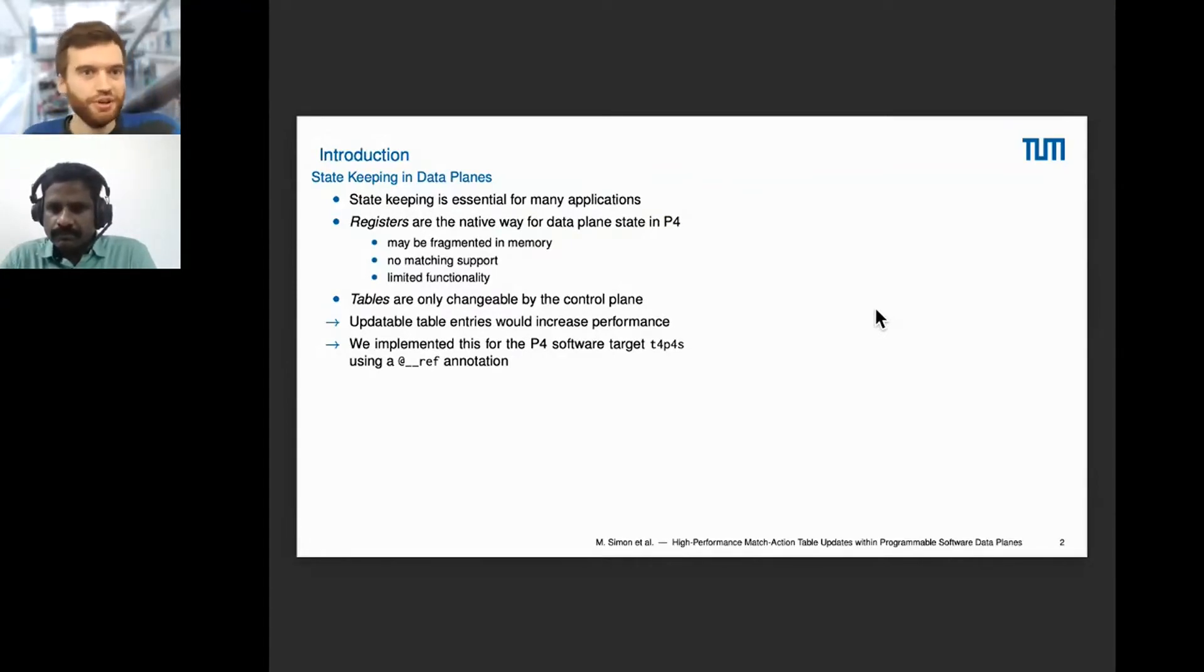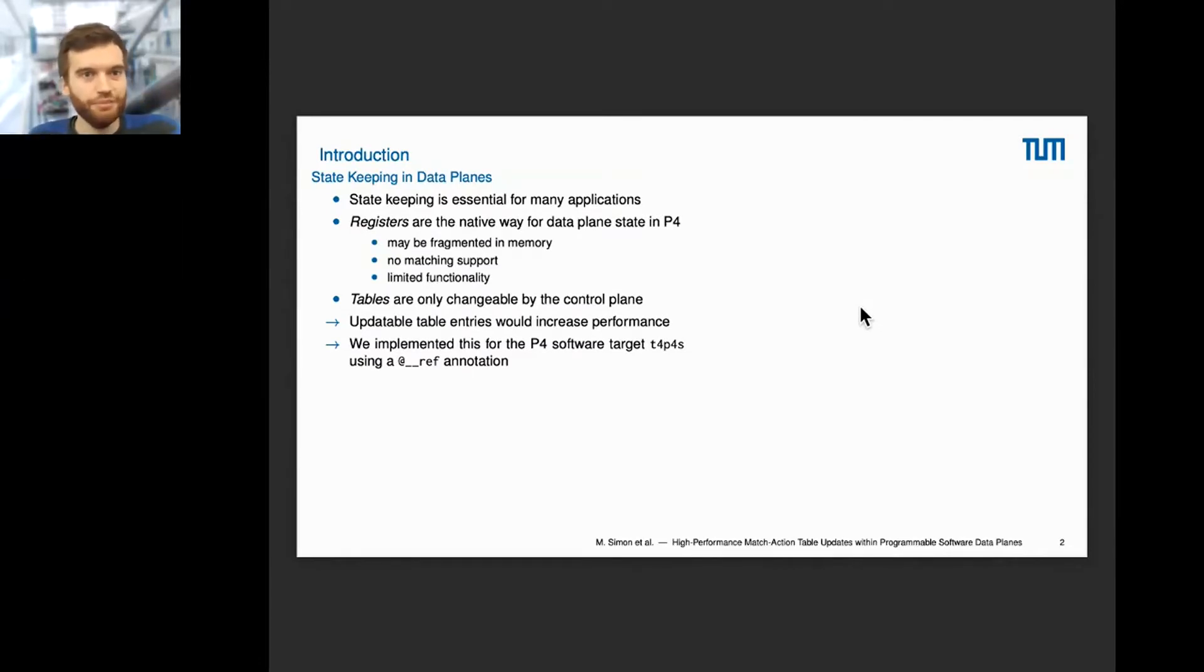Registers do not have any matching support but can just be accessed through indices and may lay fragmented in memory. Another option in P4 are tables. These have sophisticated matching support, not only exact matching but also ternary, longest prefix matching, ranges, and so on. But they are only changeable by the control plane. Now it would be nice to have updatable table entries directly within the data plane to increase performance and have state keeping directly in the table. We implemented this for a software target, TAPAS, using an @ref annotation.